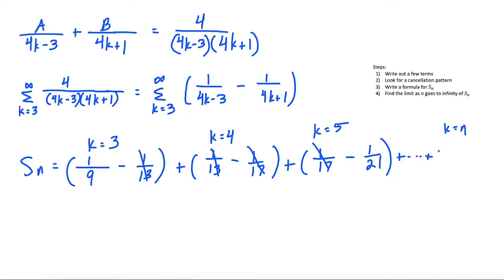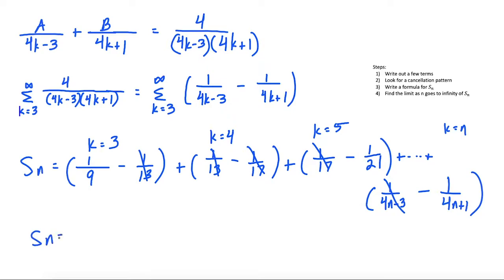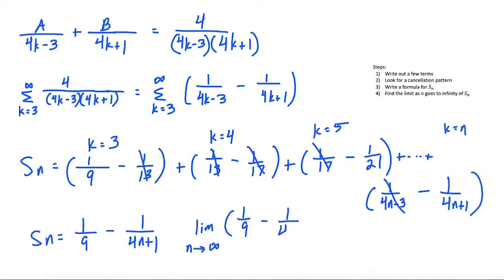This tells us that the sum of the first n terms is s(n) = 1/9 minus 1 over (4n plus 1). To find the sum of the series, we take the limit as n goes to infinity of s(n) = 1/9 minus 1 over (4n plus 1). The second term goes to 0 as n goes to infinity, so the sum of the series is equal to 1/9.